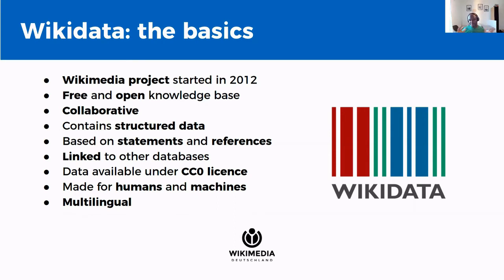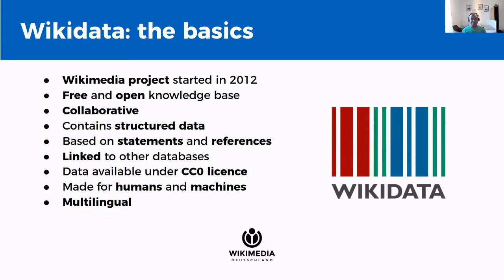Wikidata is linked to other databases via IDs called external identifiers. Those databases could also be linked to other databases and even linked back to Wikidata. When these databases are open, as Wikidata is, we call that data network linked open data. The data in Wikidata is released under a CC0 license, meaning it is in the public domain with no exclusive intellectual property rights. Wikidata is made for humans and machines and is available for anyone's use, whether on other Wikimedia projects or outside of them. Like all sister projects, Wikidata is multilingual and so it has no language barriers at all.